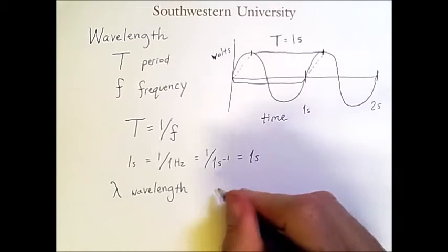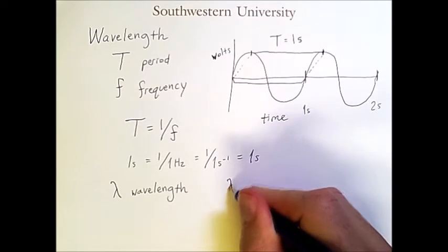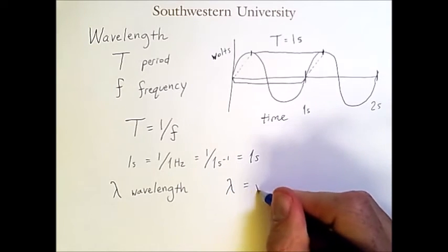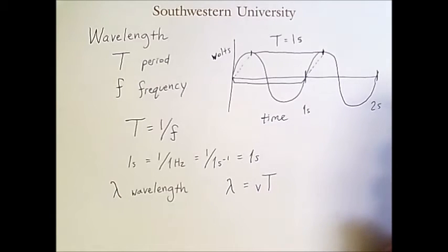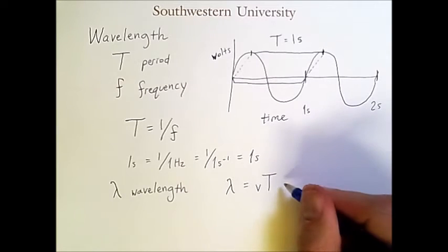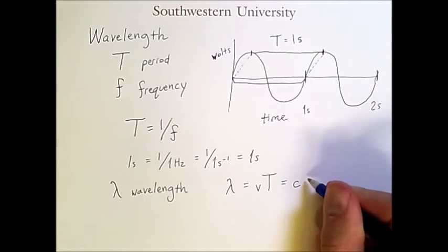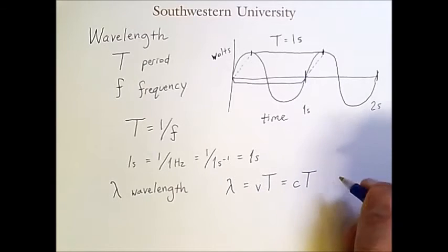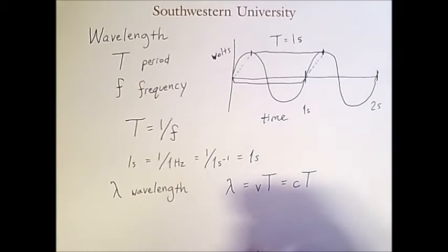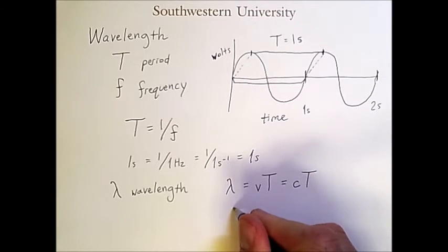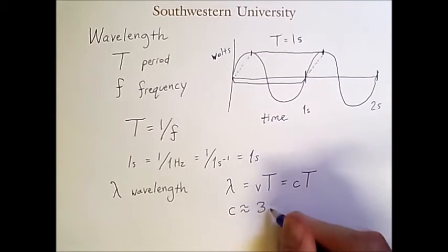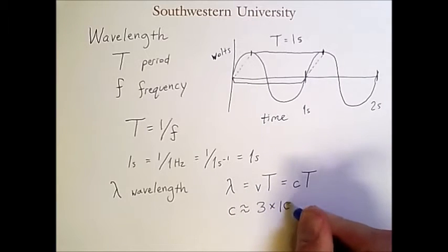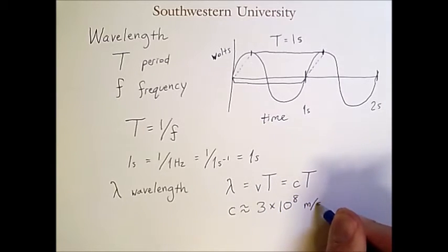And so because of this, it is always true that the wavelength equals the velocity of the wave times the period. And for most waves, the velocity is the speed of light, which is a constant represented by this little c. Now, for our purposes, it will be suitable to approximate the value of c as 3 times 10 to the 8 meters per second.